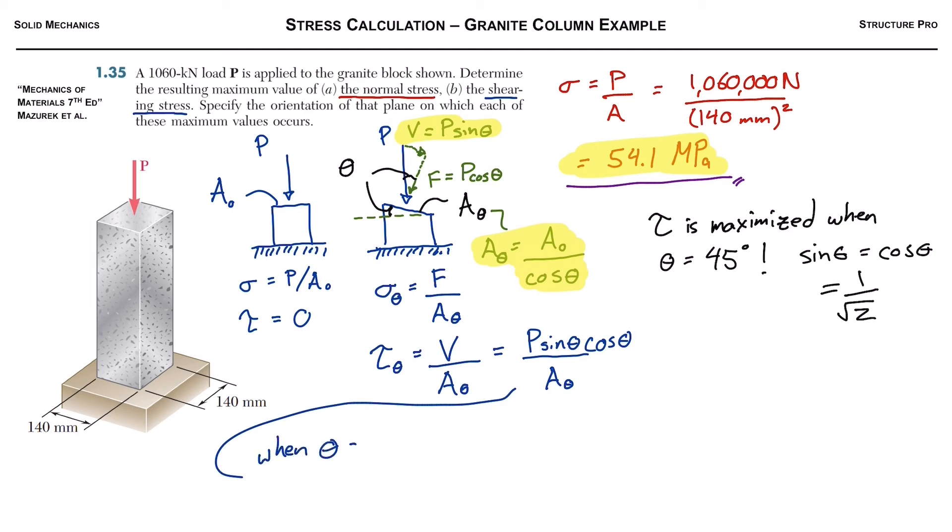So let's go back down here. When theta is 45 degrees, we can rewrite this: tau 45 degrees equals, and in this case we'll just have P over 2 times A naught.